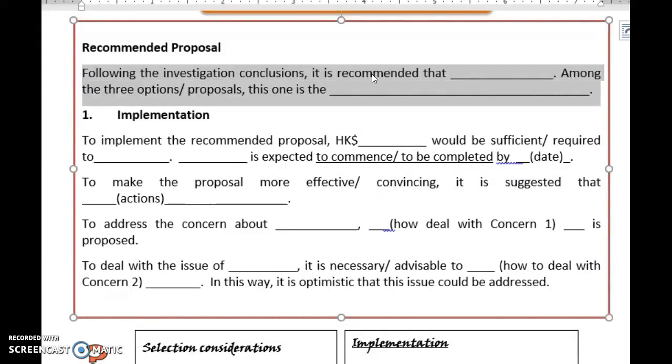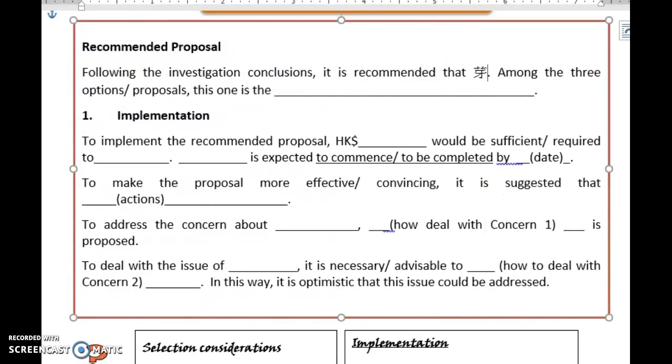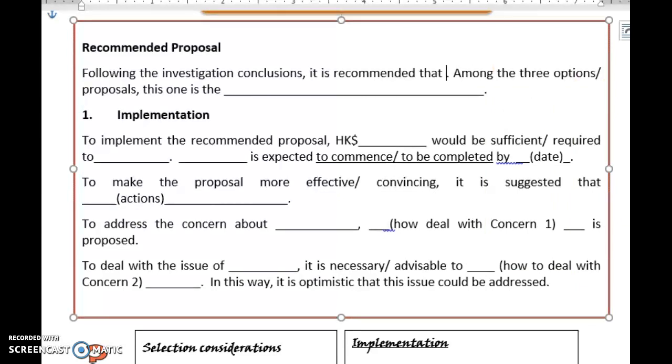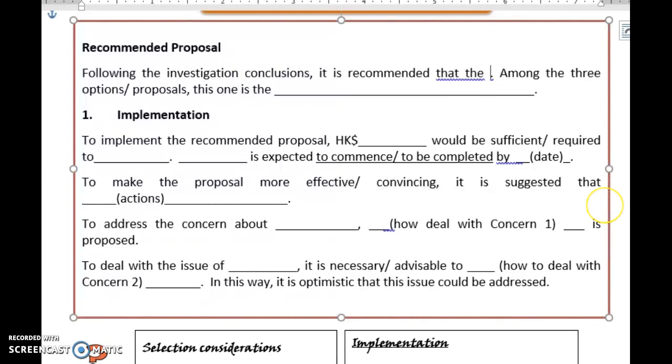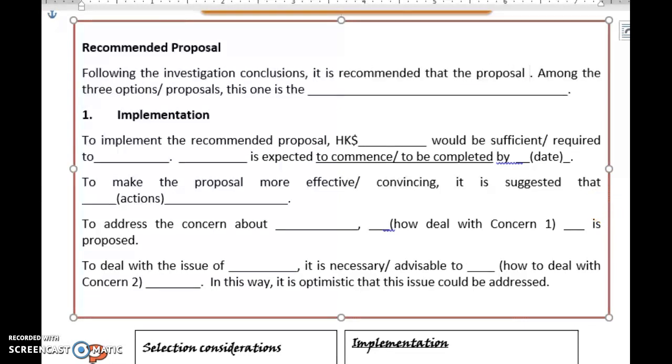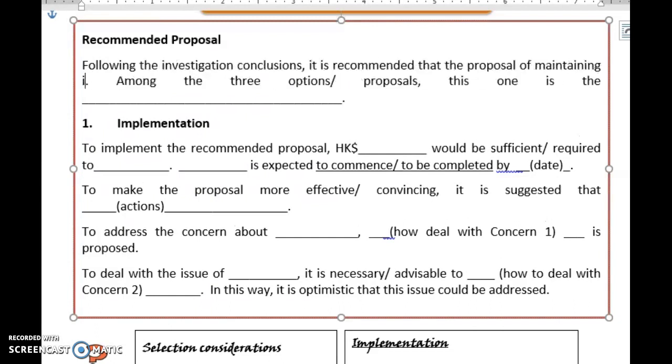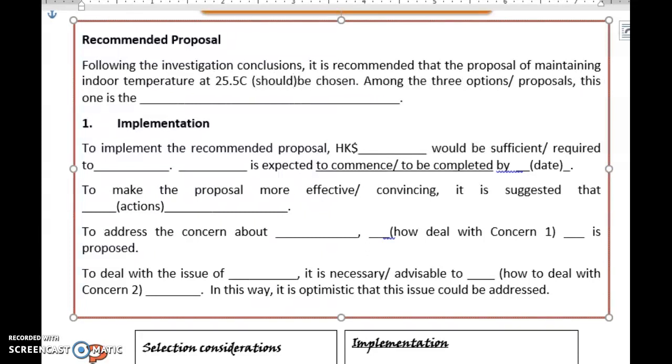So let's start. First of all, you need to tell the reader which proposal is finally chosen. So you will put maintaining indoor temperature at 25.5 degrees Celsius be chosen. It's up to you, should or without should.